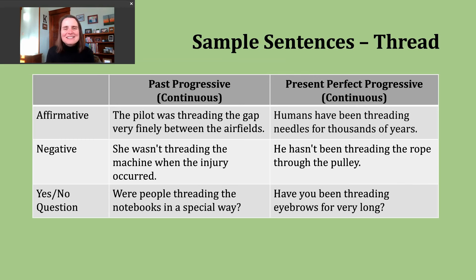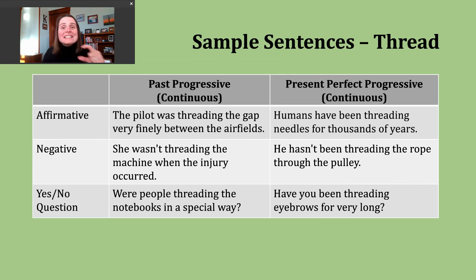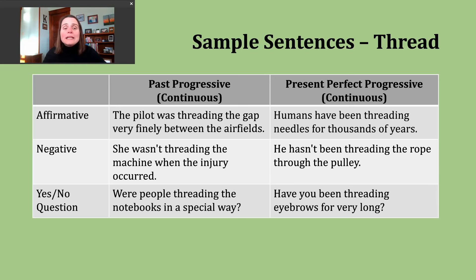To make a negative sentence in the past progressive, pay attention to your subject. If the subject is I, he, she, or it, use was not or wasn't, then the ing form of the verb. If the subject is you, we, or they, use were not or weren't, then the ing form. Example: she wasn't threading the machine when the injury occurred. Here, maybe someone has hurt themselves while using a sewing machine, but we're describing what action was not continuing at that time.